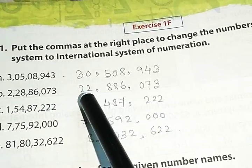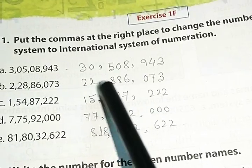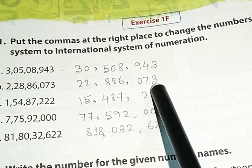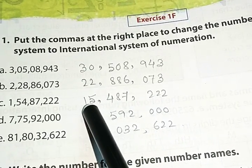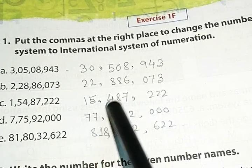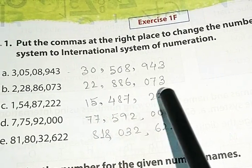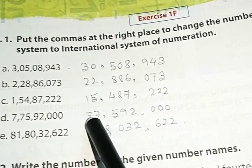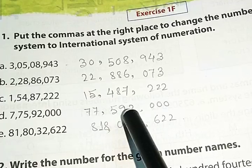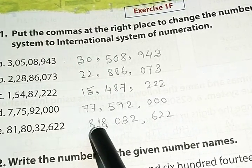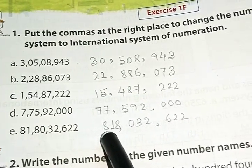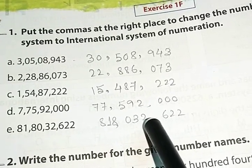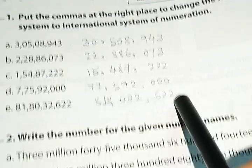Same way, next answer will be 22,886,073. Third one, 15,487,222. Next, 77,592,000. Last one, 818,032,622.